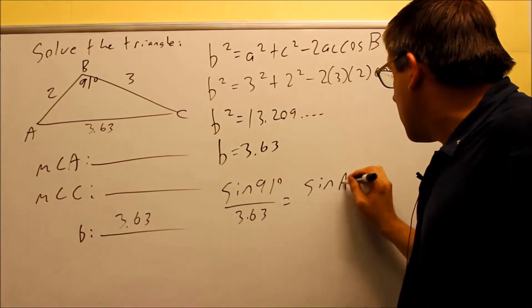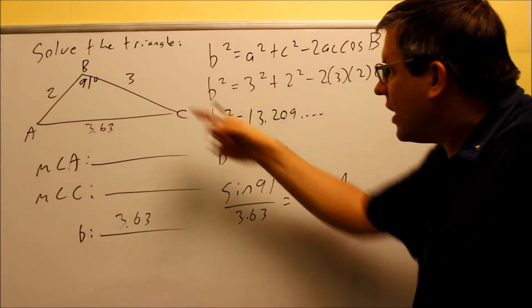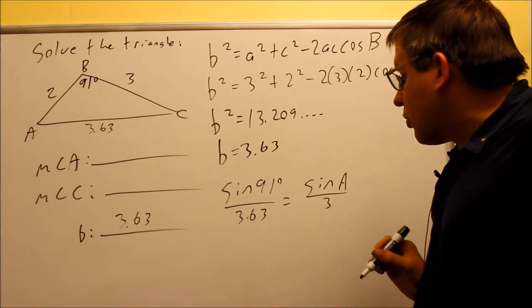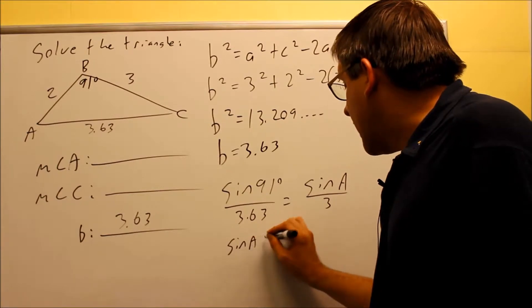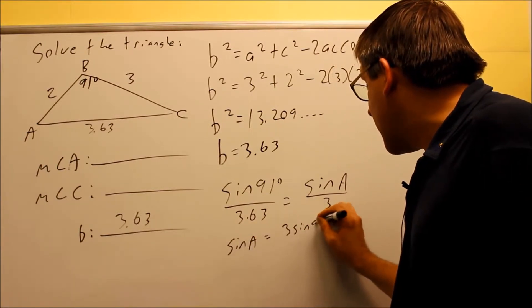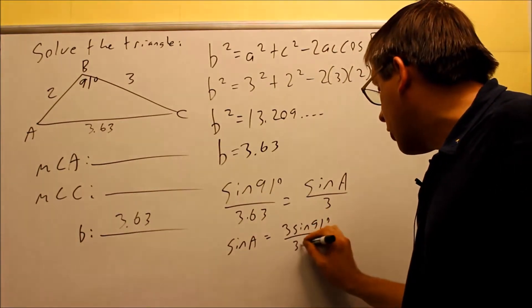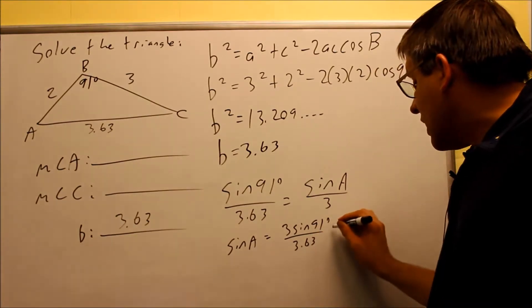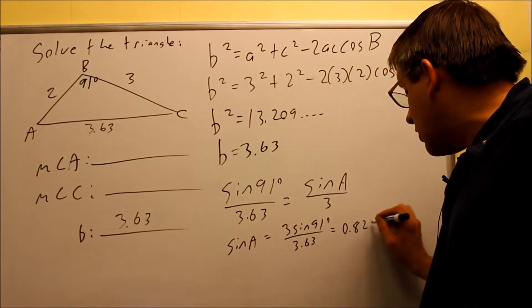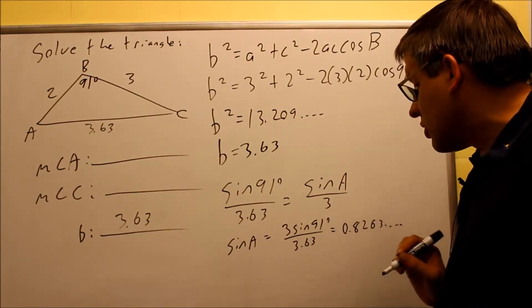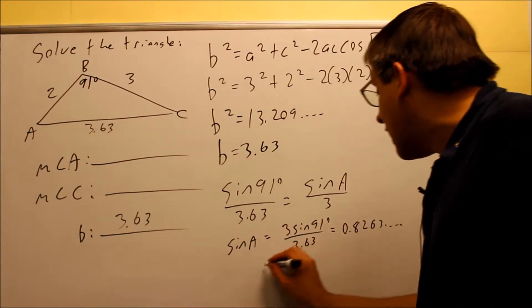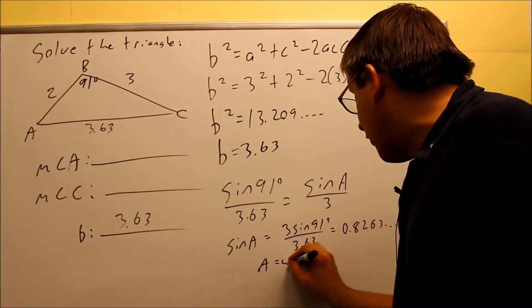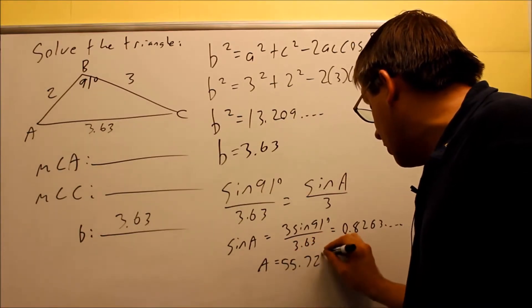So I'm going to cross multiply and solve for sine A. I get 3 sin(91°) / 3.63. And that's going to give us this decimal 0.8263 with some more decimals. You want to take the inverse. So you're taking the inverse sine of A and that's going to give you 55.72 degrees.